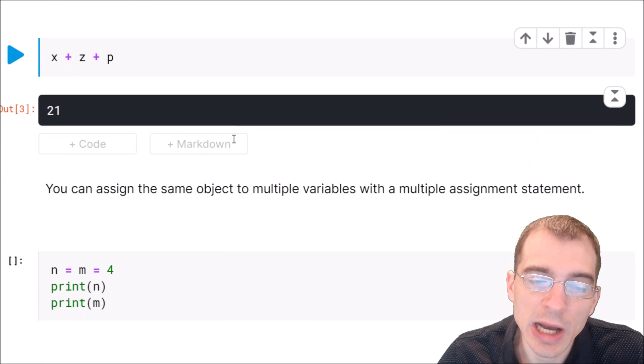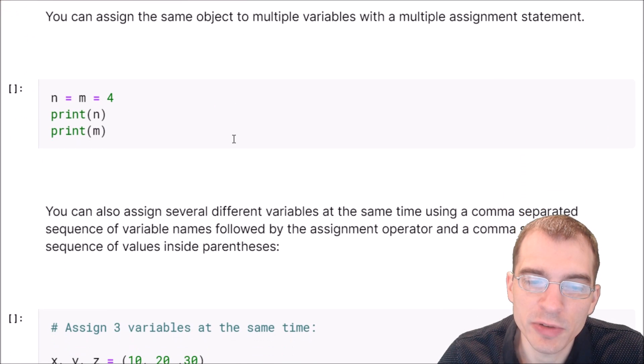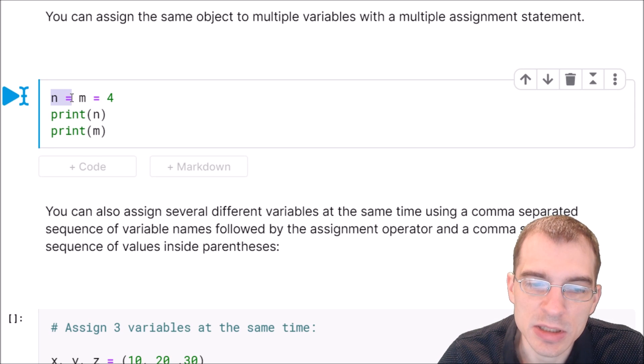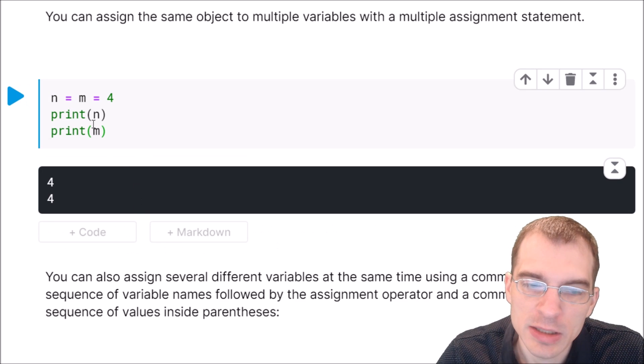It is also possible to assign multiple different variables at the same time in one string of assignments. Here we're saying n assign m assign 4. This is actually going to assign both n and m the value 4. This is a bit of an odd construction, so I wouldn't necessarily recommend you do this, but know that it is possible to do that.